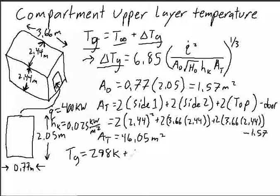So Tg plus 6.85, that's an empirical constant, so it's important to use the right units for these terms.